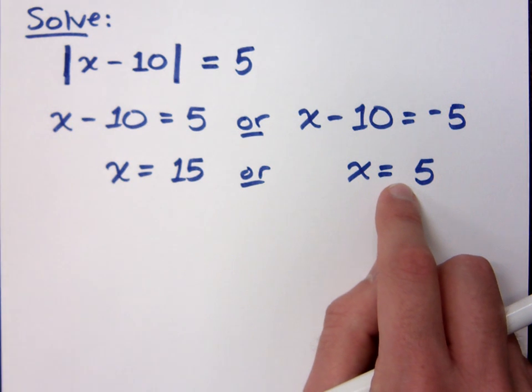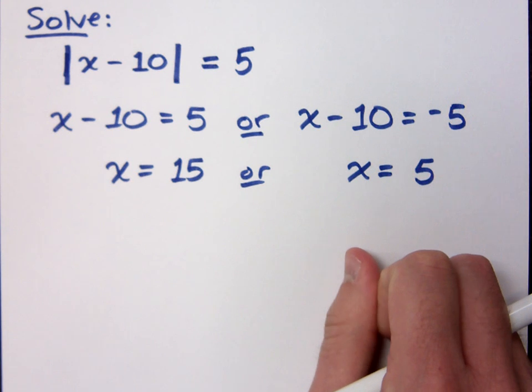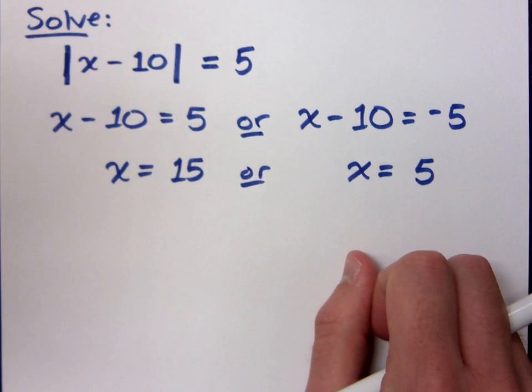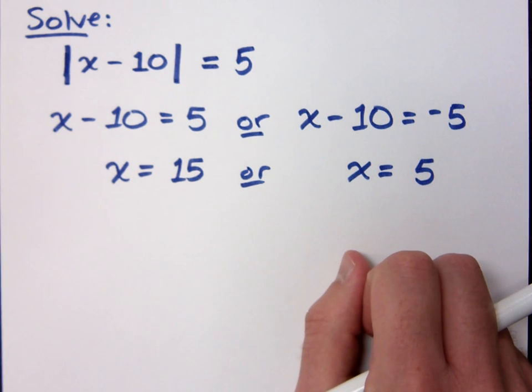Really, when you look at that, it's the absolute value of X minus 10 equals plus or minus 5. No. The absolute value does not equal plus or minus. But you could say X minus 10 equals plus or minus 5. The absolute value does not equal plus or minus. The insides, the innards, would be equal to plus or minus.